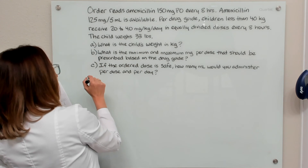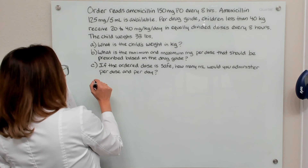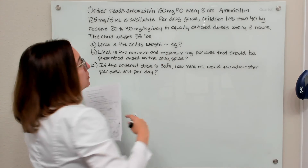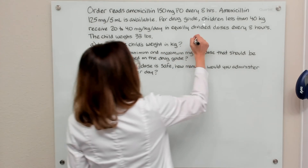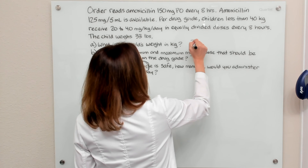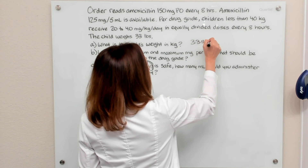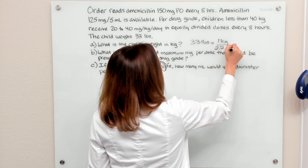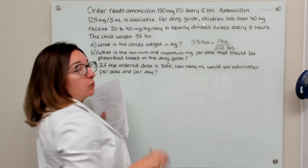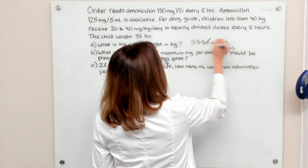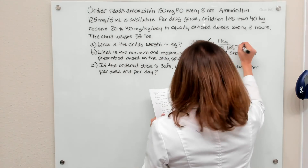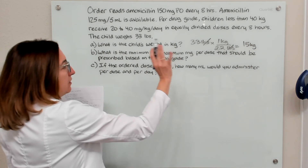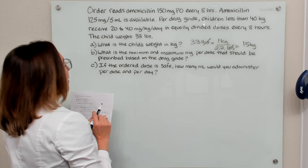We have three different questions being asked here. Our first question is: what is the child's weight in kilograms? We would calculate that by taking their weight in pounds and dividing by 2.2, or you can multiply by the conversion factor of one kilogram equals 2.2 pounds. Crossing off the pounds, we end up with 15 kilograms. So our patient weighs 15 kilograms — that's the answer to part A.